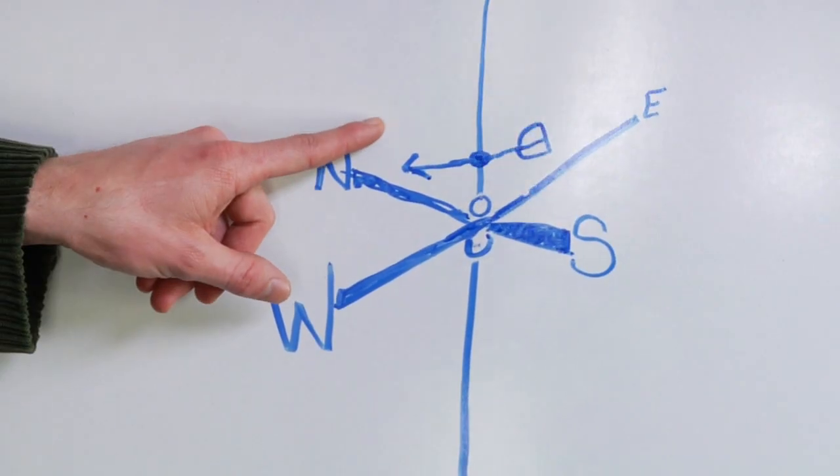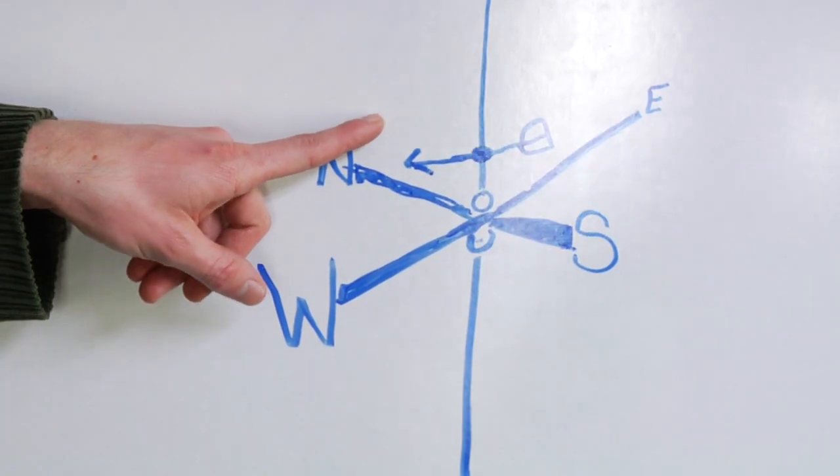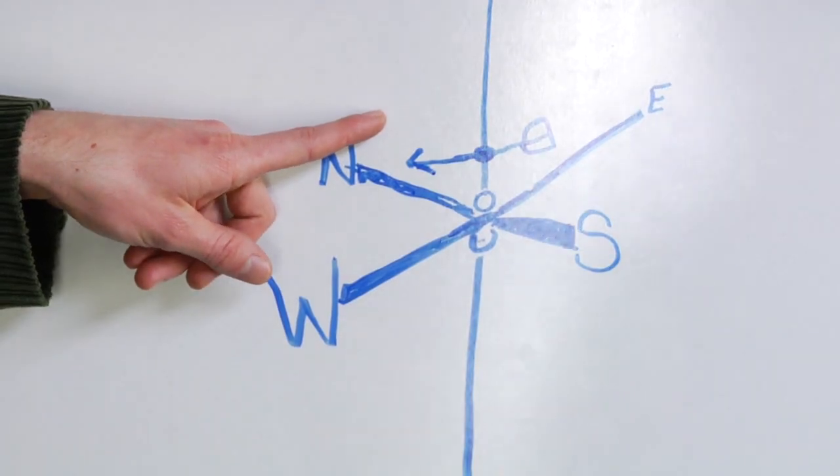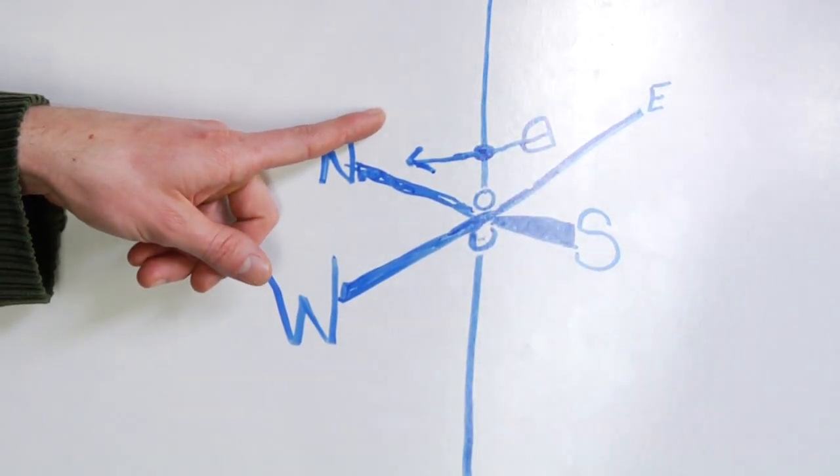So weather vanes contain an arrow or some sort of device that's going to point in the direction and there's two main features of this arrow.